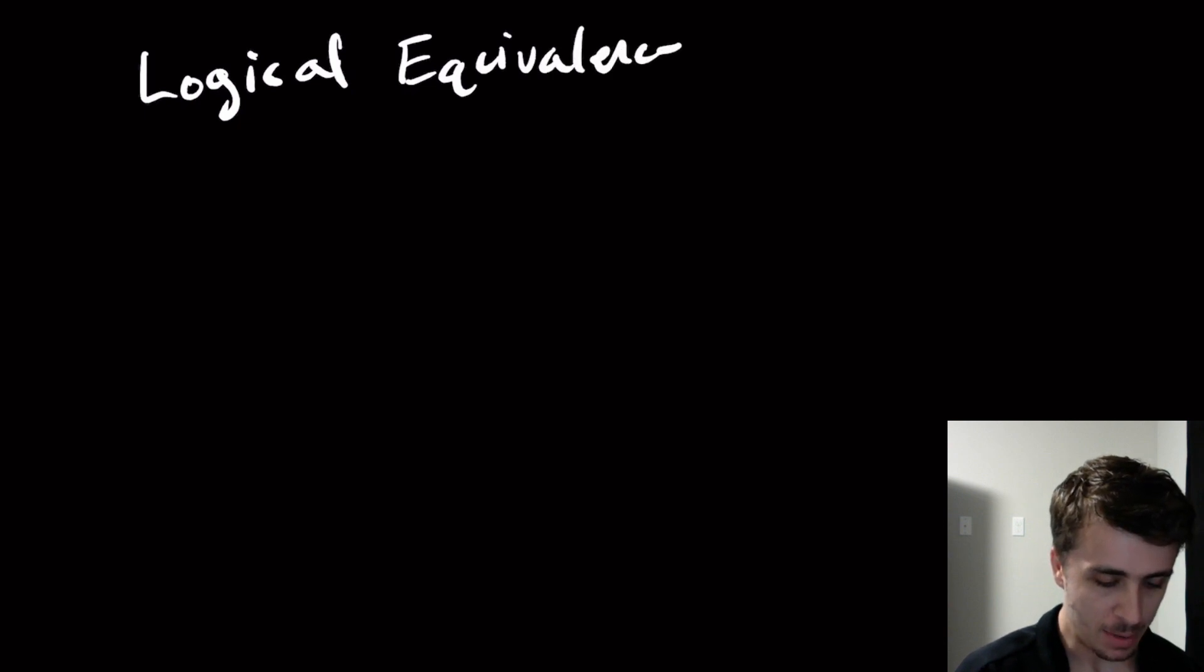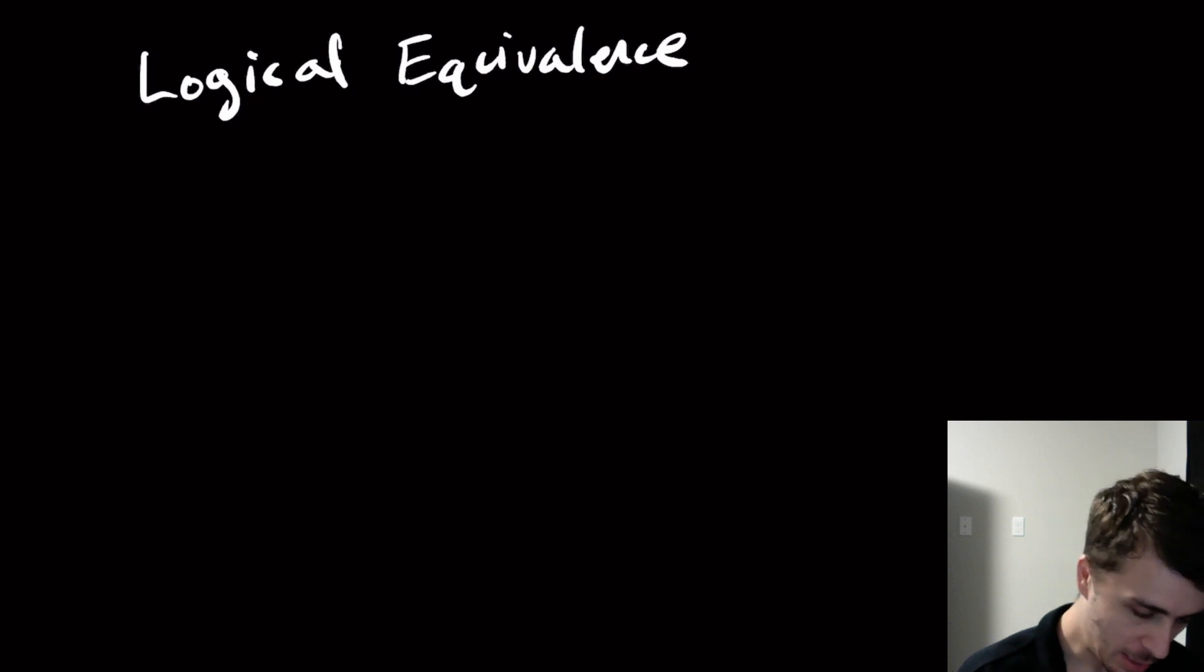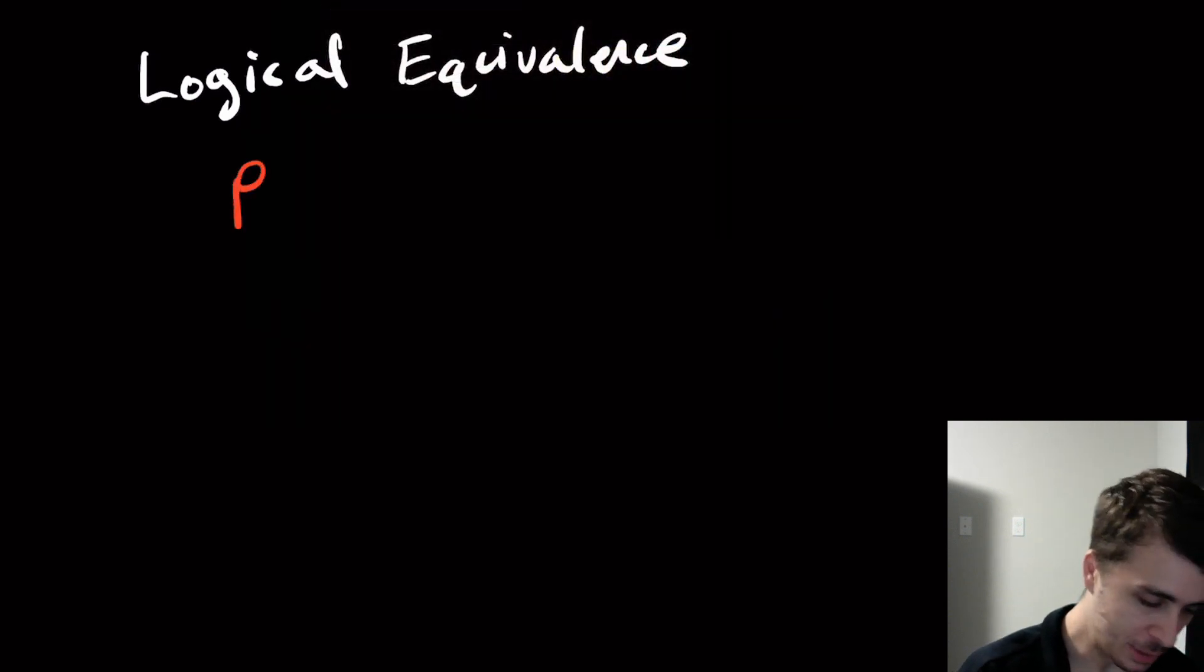Hi, and welcome to another edition of Easy Theory. Today we're going to continue our series on discrete math, and we're going to talk about logical equivalences. We were talking quite a bit last time about these things called propositions and things of that nature. So suppose we had two propositions, P and Q.